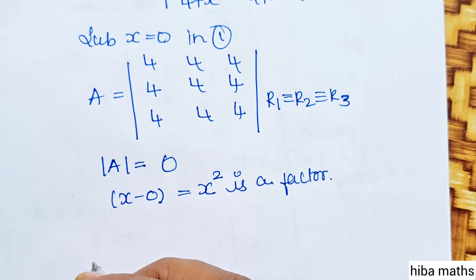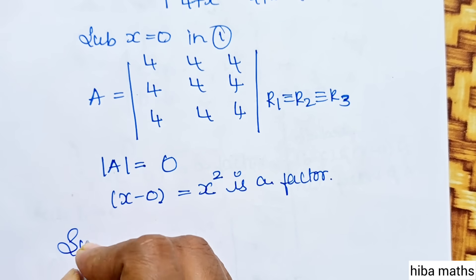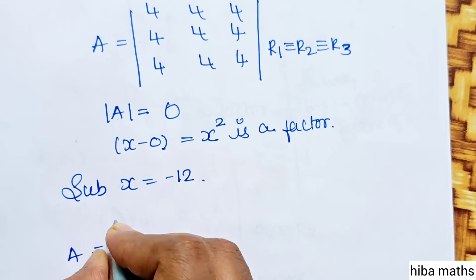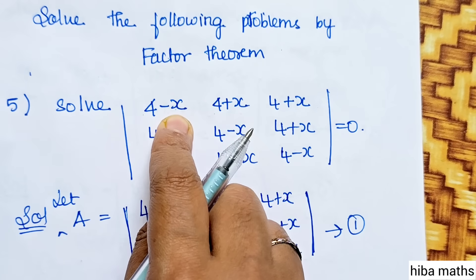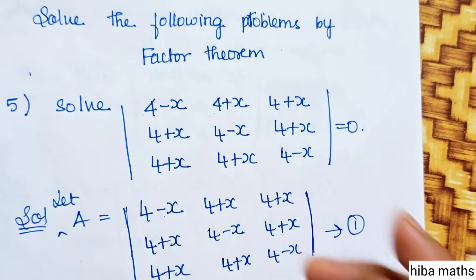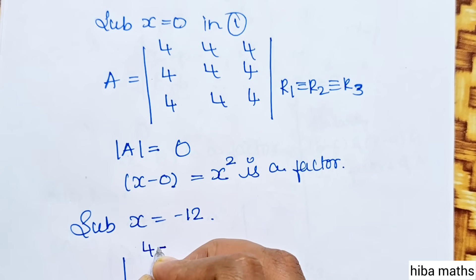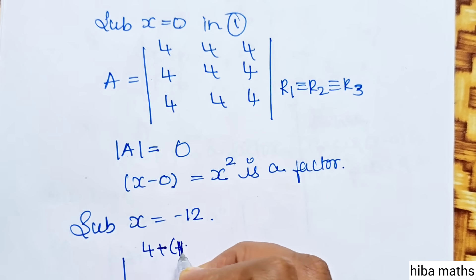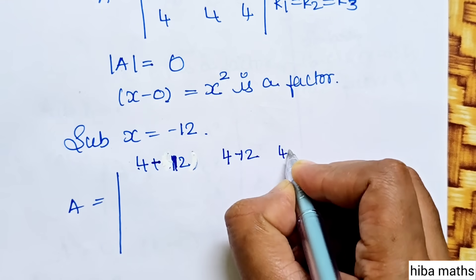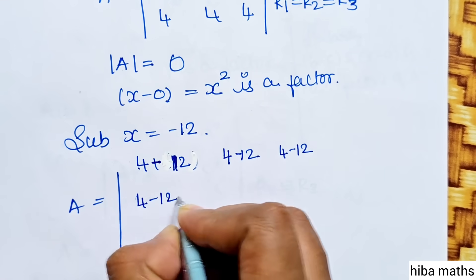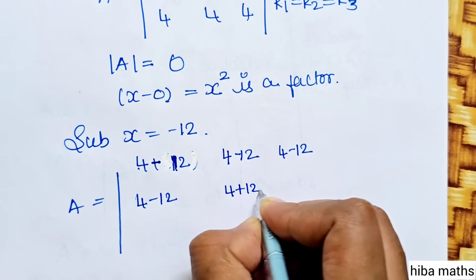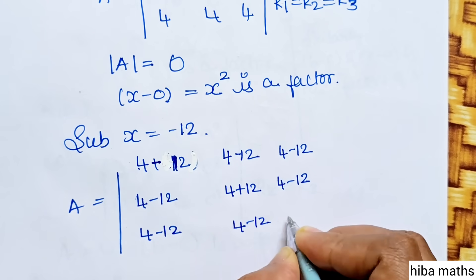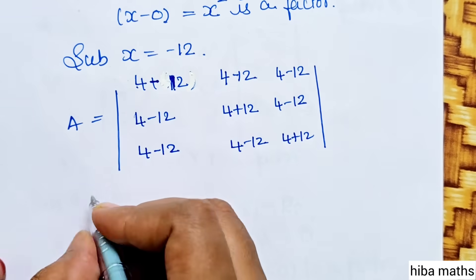Now in x, we will substitute minus 12. Substitute x equal to minus 12 and see how this matrix changes. We get 4 minus minus 12, which is 4 plus 12 along the diagonals, and 4 minus 12 for the other entries. So the matrix entries become 4 plus 12 and 4 minus 12 in pattern.